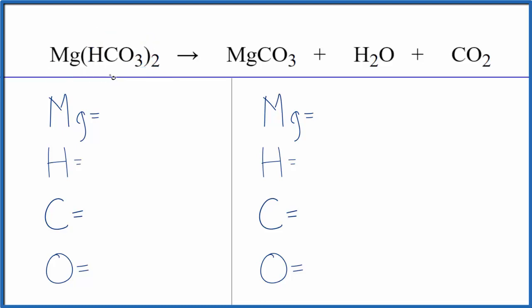So let's balance the equation. We have one magnesium atom, and then this two here, it applies to everything. So we have two times one, so we have two hydrogen atoms, two times the one, two carbons, two times three, six oxygen atoms.